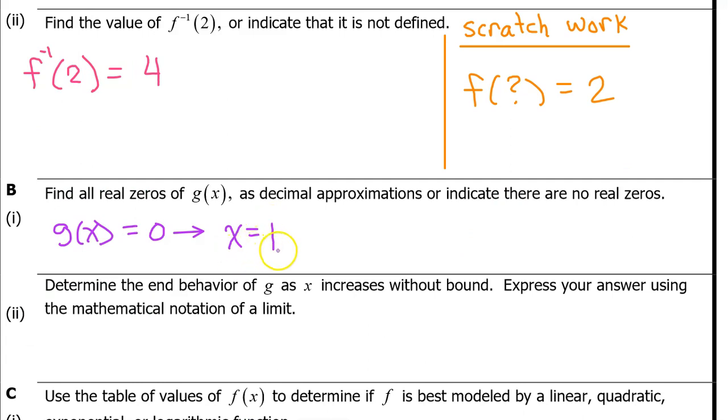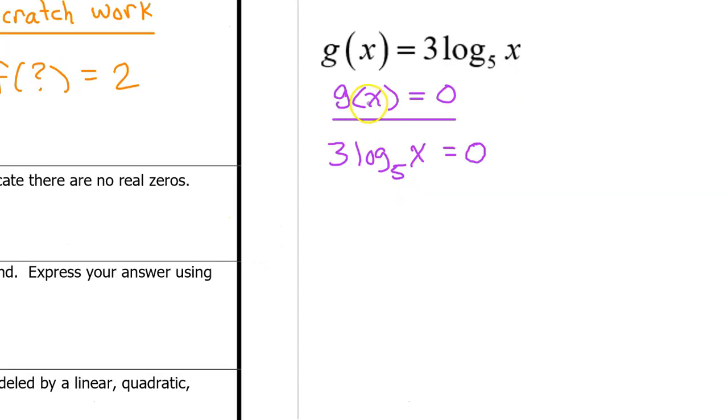That's the answer for B part 1, but we can also solve this by hand. To find the zeros of g, we set g equal to 0 and solve. Dividing both sides of the equation by 3 gives us the log base 5 of x is equal to 0.